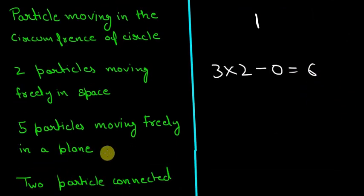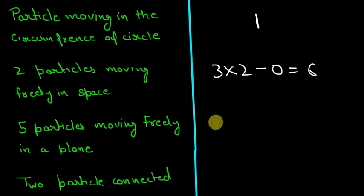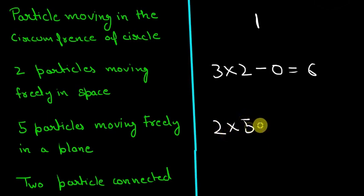Now, five particles moving freely in a plane: the plane is two-dimensional space, so two into five minus zero gives ten degrees of freedom.